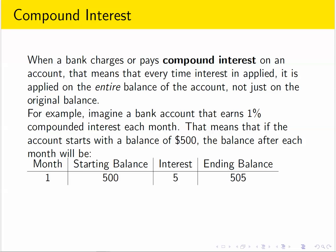Consider a bank account that earns 1% compound interest each month starting with a balance of $500. The first time we calculate interest there's a balance of $500. 1% of $500 is $5, and so that interest gets added to the starting balance creating a new balance of $505.